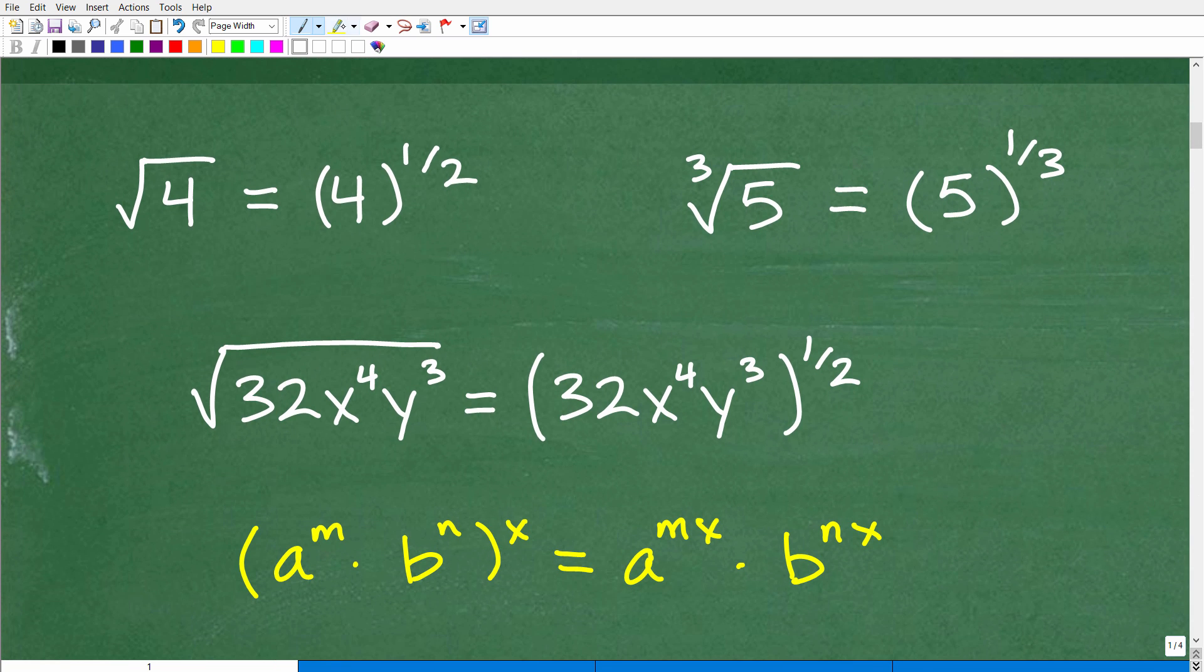Okay, so the first thing we want to realize is that when you were taking the square root of a number, like the square root of 4, that's equal to this number, 4, to the 1 half power. So this little radical sign, there's actually a little tiny 2 up here that we don't write. So let's look at the pattern here. So we have the square root of 4 is the same thing as 4 to the 1 half power. This number right here is the denominator. You always have a 1 as a numerator. And let's go ahead and just see this more clearly by the cube root of 5. Okay, so cube root of 5, you can write that as 5 to the 1 third power.